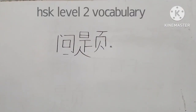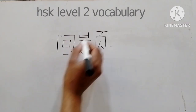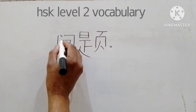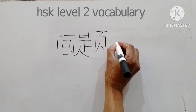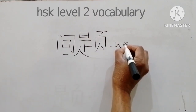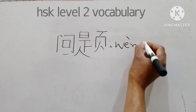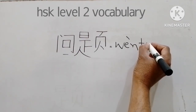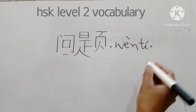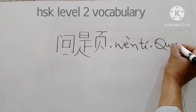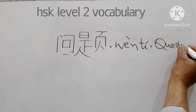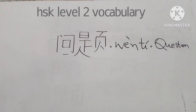Hello Friends. Today's word is VEN-THEE. Its sound pronunciation is written as VEN-THEE. VEN-THEE means question, problem.